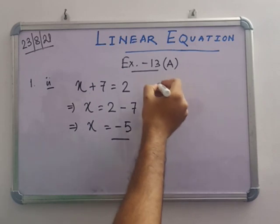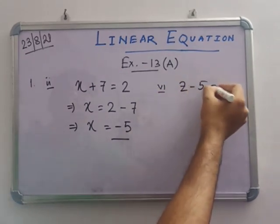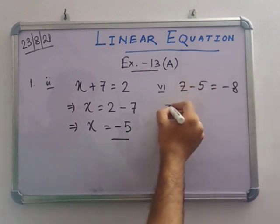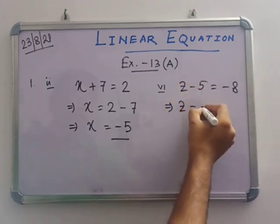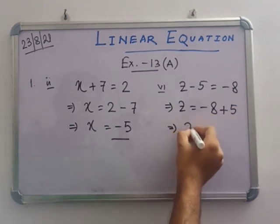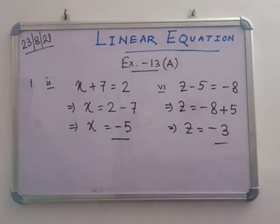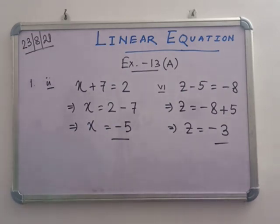Now number 6: z minus 5 equals to minus 8. So z equals to minus 8 plus 5, which gives z equals to minus 3. Verification: minus 3 minus 5 equals minus 8, so LHS equals RHS. You have to verify by your own.